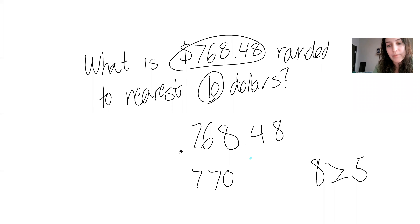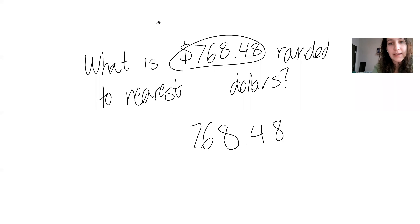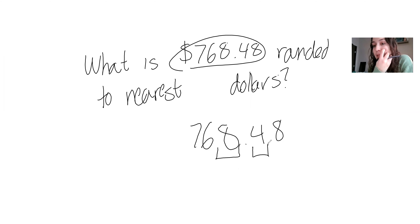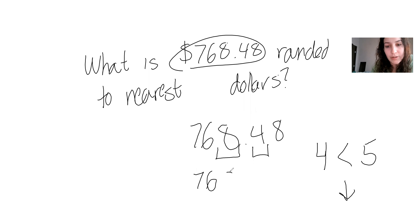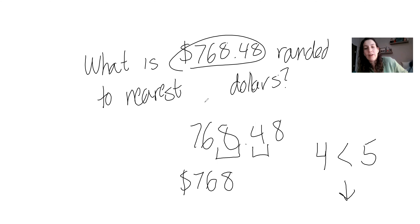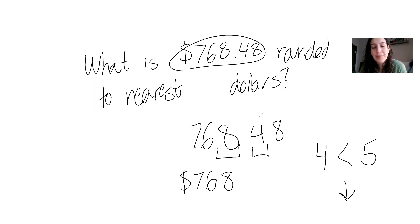Let's see what happens if instead of rounding to the nearest $10, we round to the nearest dollar. In that case, we look at the ones place and we pull out the tenths place — the first digit after the decimal point — which is 4. How is 4 related to 5? Four is less than 5, so our rule tells us to round down. Rounding down, we are left with $768. Our previous example gave us $770 rounded to the nearest $10, and now $768 rounded to the nearest dollar — only a $2 difference here, but sometimes it can be much greater.